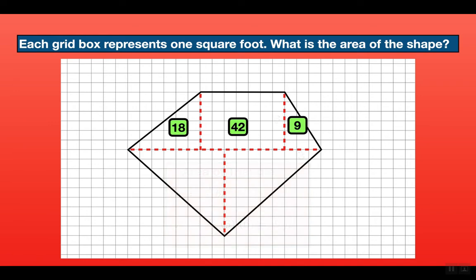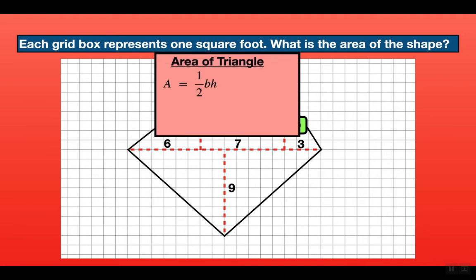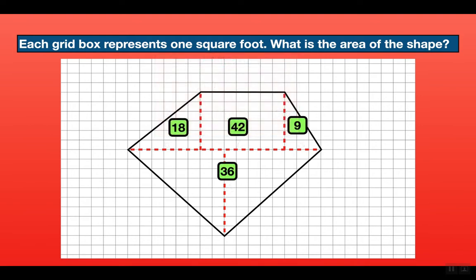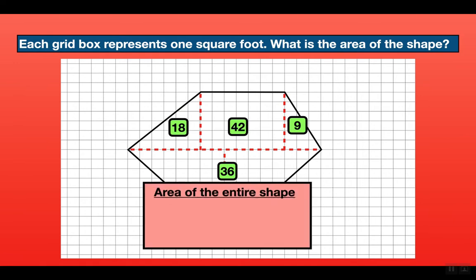Now let's do the triangle on the bottom. When we add up that line we get a base of 16 units and the height of the triangle is 9. The formula for the area of a triangle is area equals one-half times base times height. So one-half times 16 times 9 gives us an area of 36 square feet. To get the area of the entire shape we add all those numbers: 18 plus 42 plus 9 plus 36, which gives us a total area of 105 square feet.